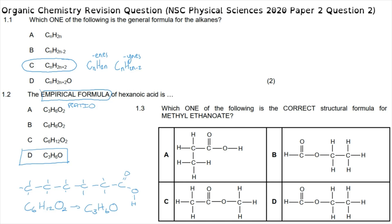Question 1.3 asks for the correct structural formula for methyl ethanoate. This is an ester made up of two groups: the methyl part is attached only to the single-bond oxygen — one carbon there — and the ethanoate part is attached to both the single-bond and double-bond oxygen, meaning two carbons. Option C is correct, showing one carbon on the single-bond side and two carbons on the double-bond side.